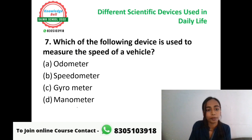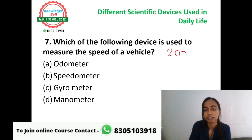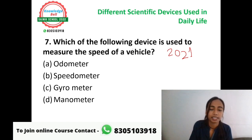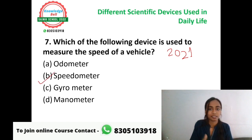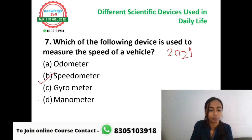Which of the following is used to measure the speed of a vehicle? This is an important question because last year in the SAINIK school AISSEE Class 6, 2021 paper, this very same question appeared in the GK section. Options are A: odometer, B: speedometer, C: gyro-meter, and D: manometer. Speedometer is the correct answer — speed, speedometer is used to measure the speed of a vehicle. Odometer, gyro-meter, and manometer are not used to measure vehicle speed.